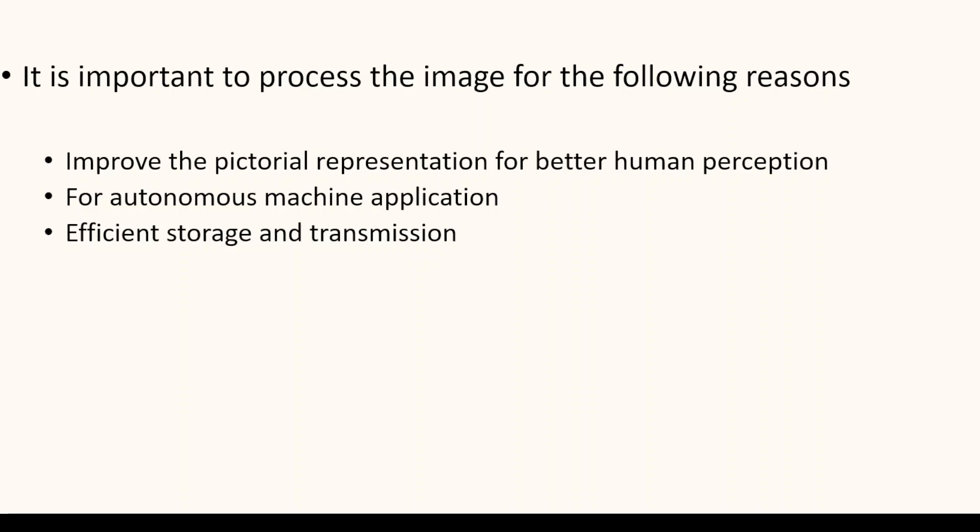Image processing is also important in industrial applications for automation of various machine applications. Thirdly, it is also necessary to process an image for efficient storage and transmission. For example, if we want to store an image, it occupies certain space in memory. We process the image so that the amount of memory space occupied by the image is reduced. These are a few of the reasons that show image processing is very important.